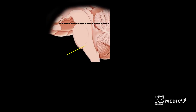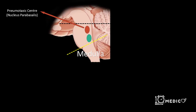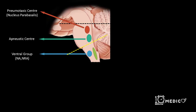The centers of respiration are present in the brainstem. There are two centers in the pons: the pneumotaxic center in the upper pons and the apneustic center in the lower pons. In the medulla, ventrally lies the ventral group of neurons and 5 mm posteromedially lies the dorsal group of neurons. The neurons of the pneumotaxic center lie in the nucleus parabrachialis, the ventral group in the nucleus ambiguus and retroambiguus, and the dorsal group in the nucleus tractus solitarius.